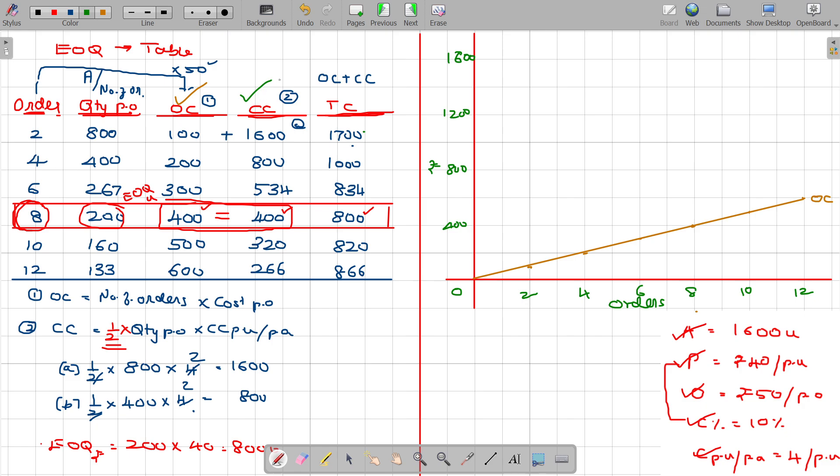Now I am going to plot the carrying cost here. 2 orders compared to 1600, 4 at 800, 6 at 534, 8 at 400, then 320, finally 266 is the carrying cost. I am connecting the dots, this is the carrying cost.